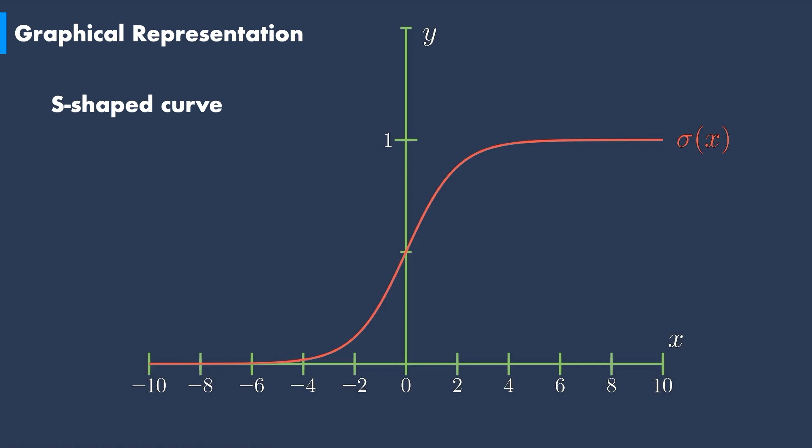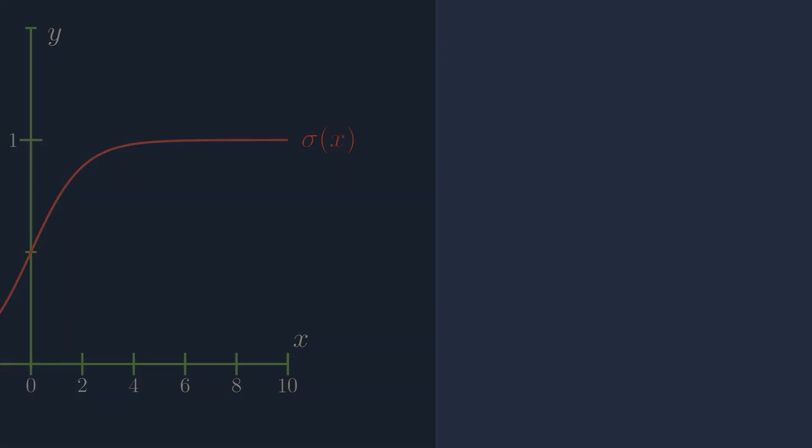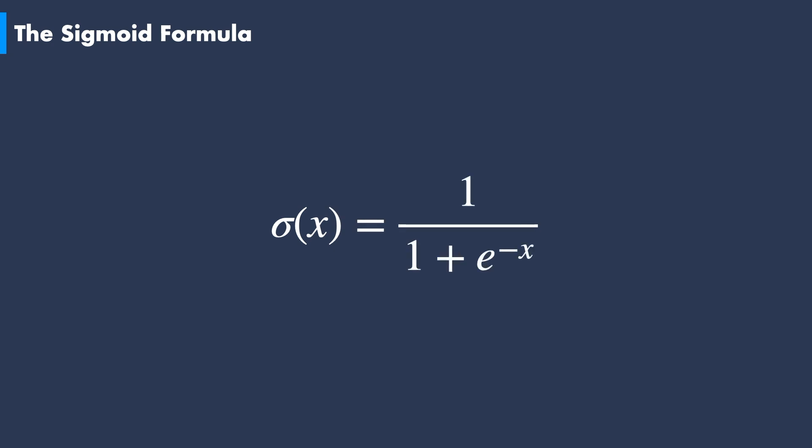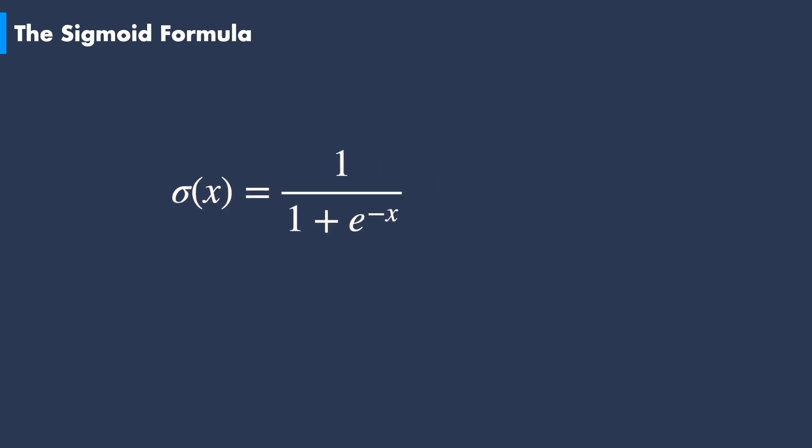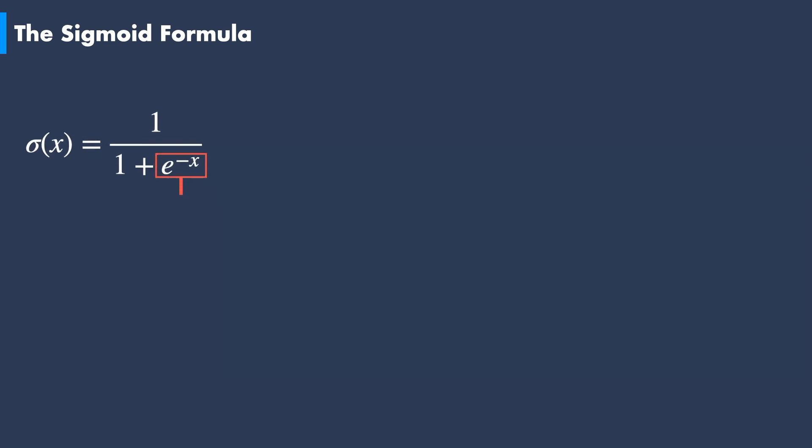How does the formula of the sigmoid function look like? The sigmoid function, which is denoted by the Greek letter sigma, is given as 1 over 1 plus the exponential of minus x. Here, the exponential of minus x is the inverse of the well-known exponential function.